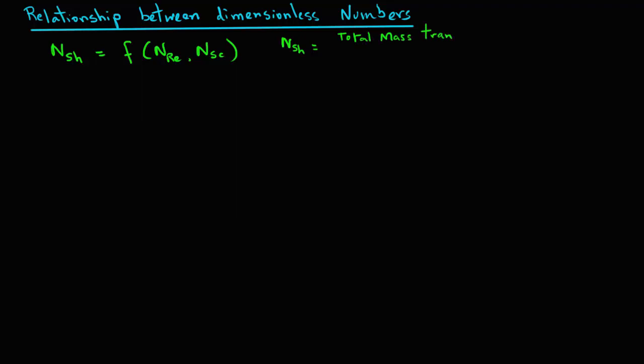The Sherwood number is a ratio between the total mass that gets transferred divided by the total mass that is transferred by molecular diffusion.